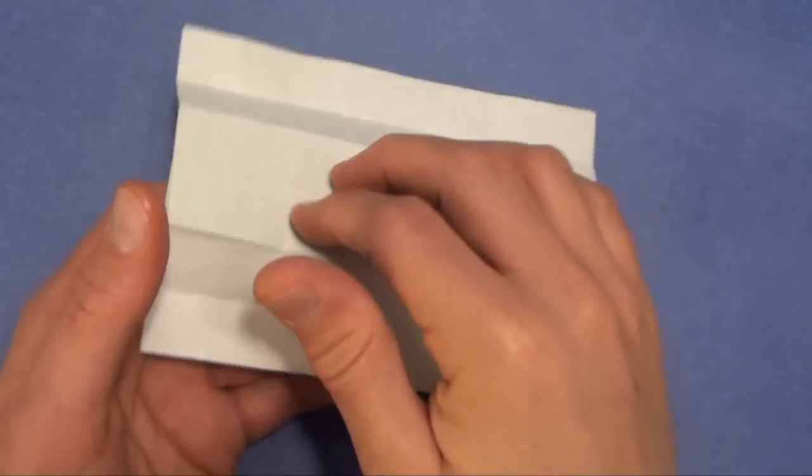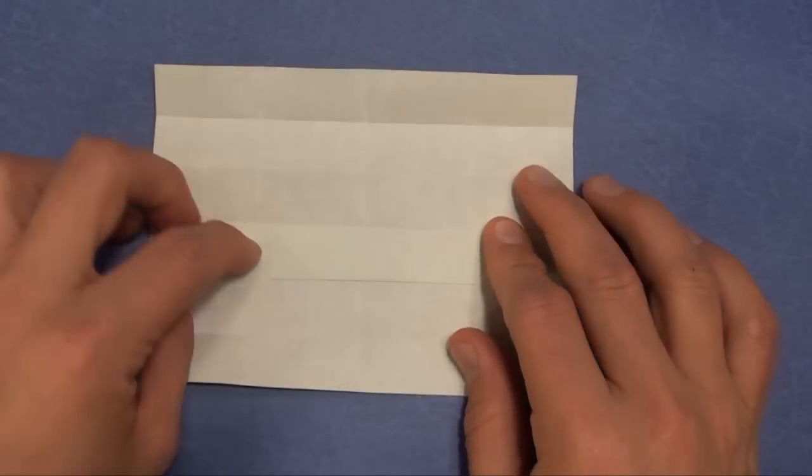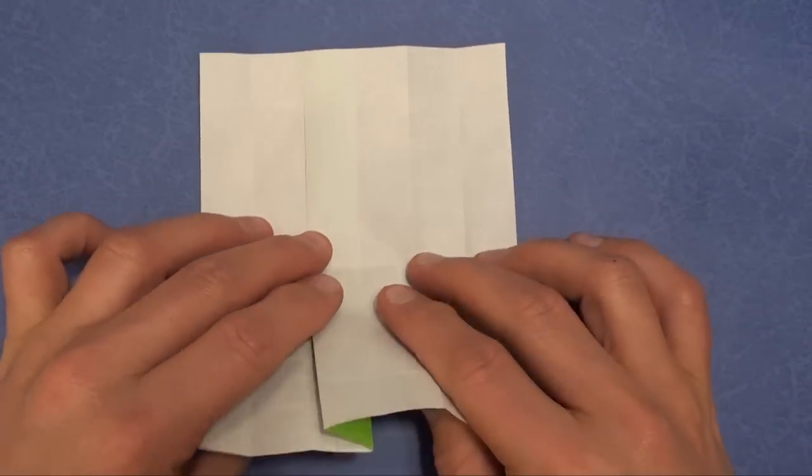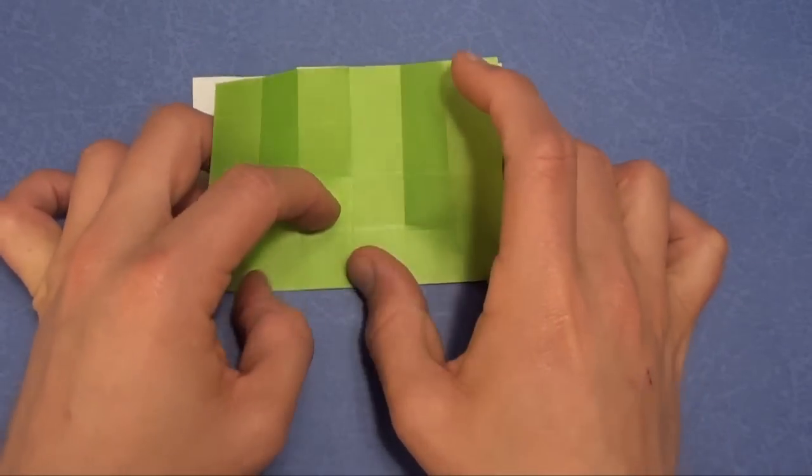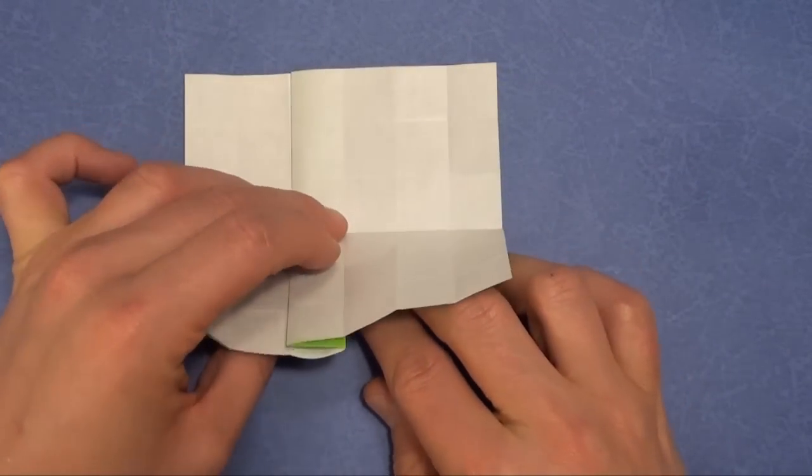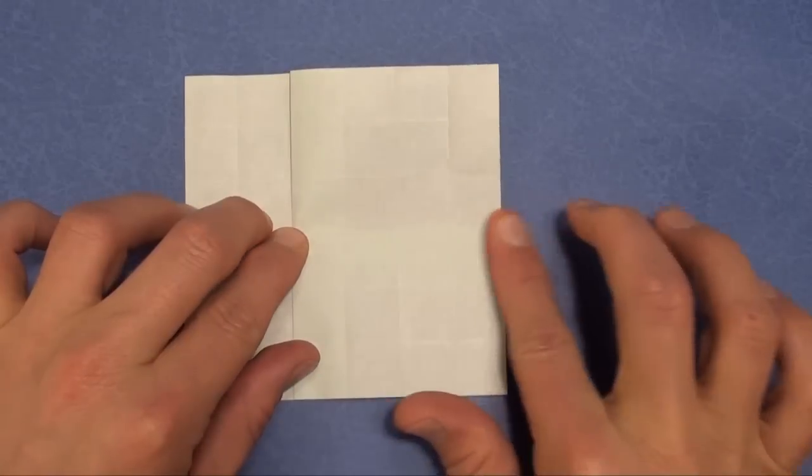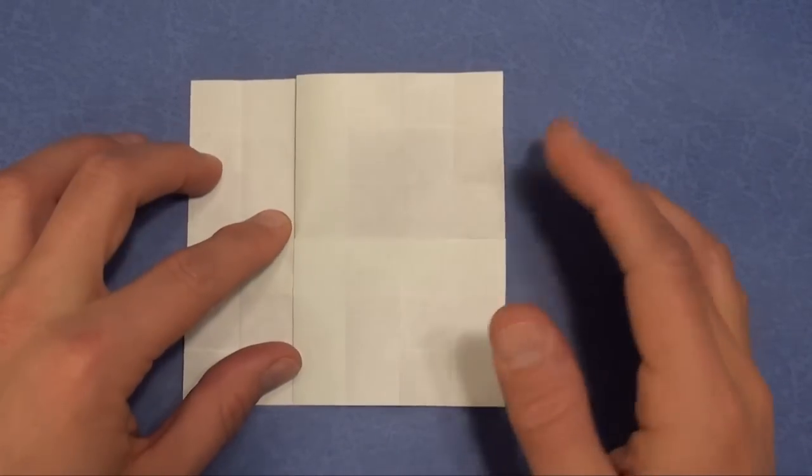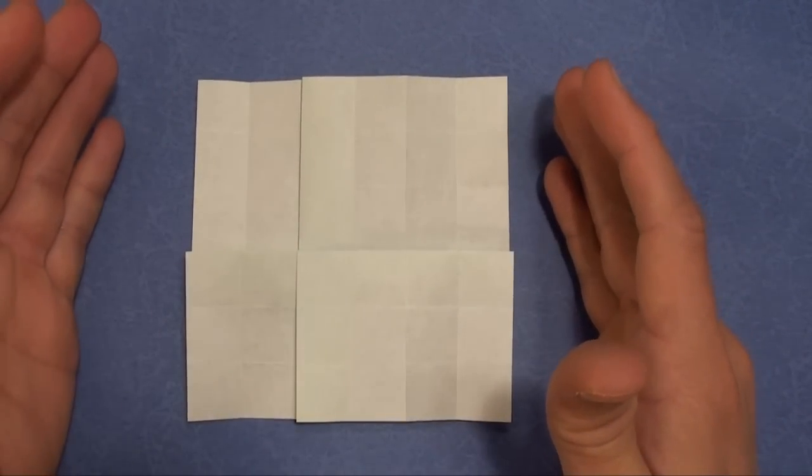Okay. Now turn it over. Rotate. And we're going to do the same thing. Valley fold in half and fold down like this. Now here we have a six by six grid of creases.